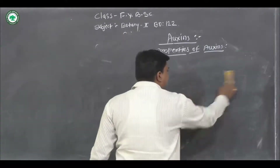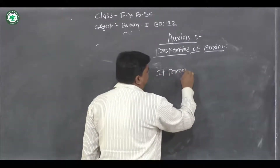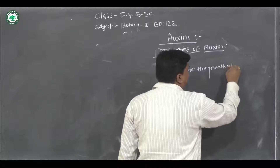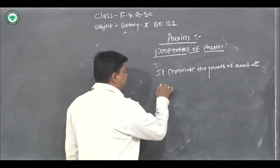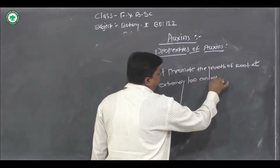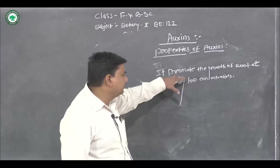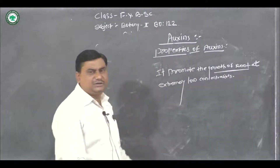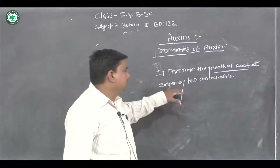Fifth property: auxin promotes the growth of root at extremely low concentration. This property is used in the formation of roots.